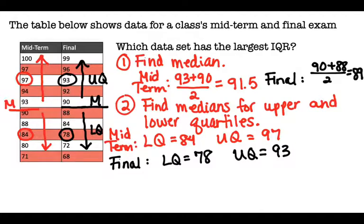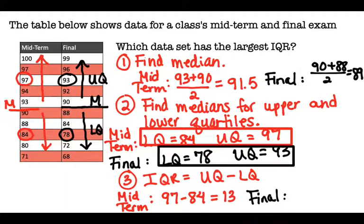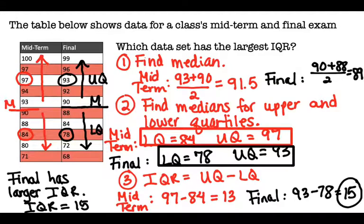Finding the IQR is a simple formula: upper quartile minus lower quartile. For midterm, that's 97 minus 84, which equals 13. For the final, it's 93 minus 78, which equals 15. The question asks which had the largest IQR — that would be 15, so the final side. Your question might ask for the smallest IQR, so pay attention and pick the right answer.